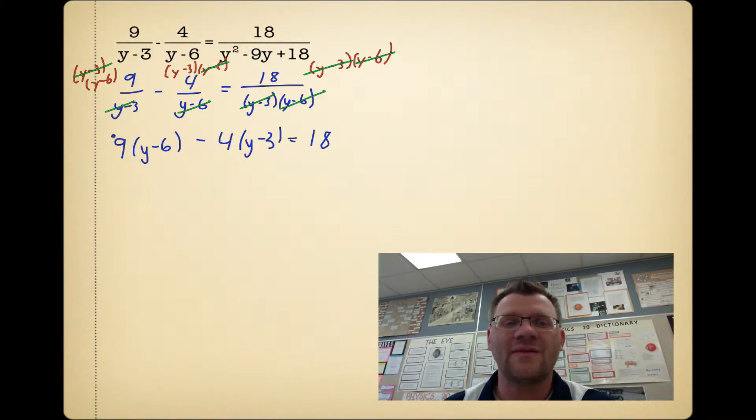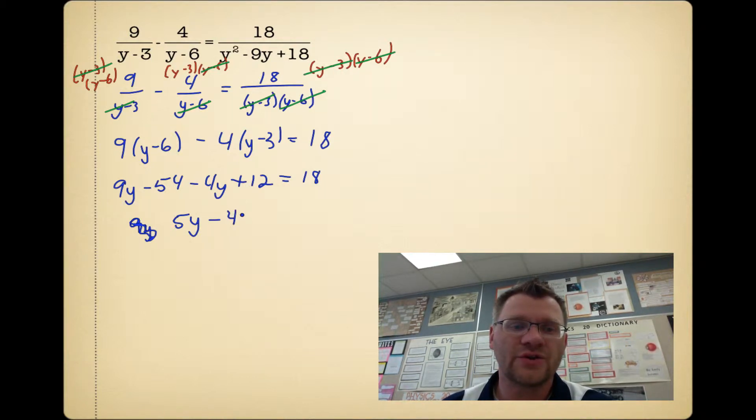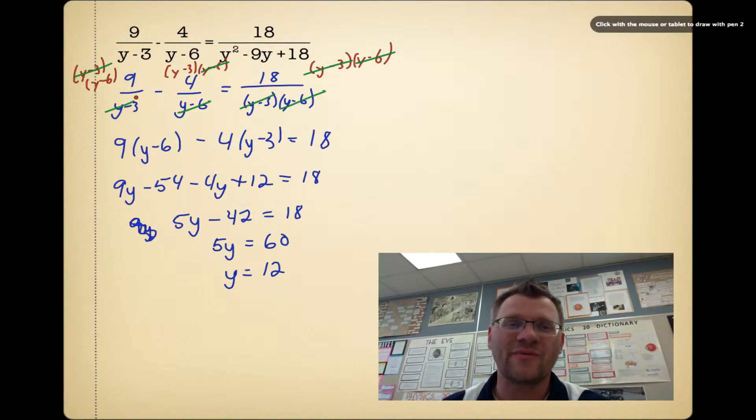I just have to expand this equation and solve. I get 9y - 54 - 4y + 12 = 18. I have 9y - 4y, which is 5y, and negative 54 plus 12, which is negative 42. If I add 42 to both sides, I get 5y = 60, which means that y = 12. I double-check with my non-permissible values. My non-permissible values would be these denominators, so y can't equal 3 and y can't equal 6. I have a y value of 12, and it doesn't equal 3 or 6, so I am good to go.